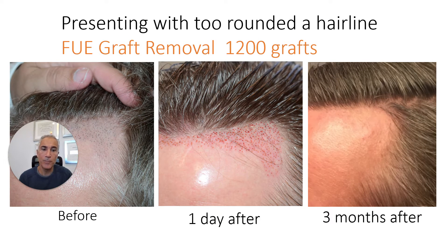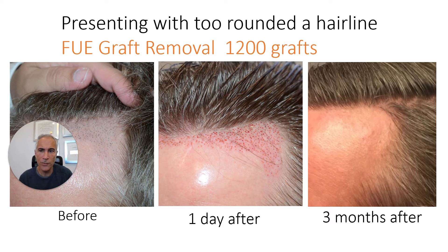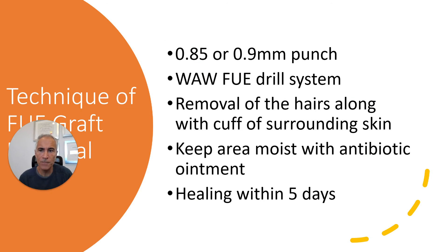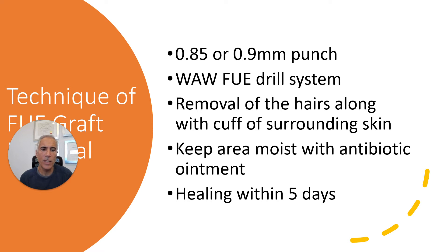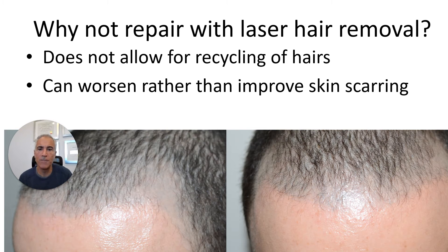Another example: this patient had too rounded of a hairline. You can see the before, one day after, and three months after — how nicely it healed after removal of 1,200 grafts. The technique uses a 0.85 millimeter punch to remove the hairs along with a cuff of surrounding skin. We like the WAW FUE system. Post-operatively, the area is kept moist with antibiotic ointment, and usually within five days it's fully healed.